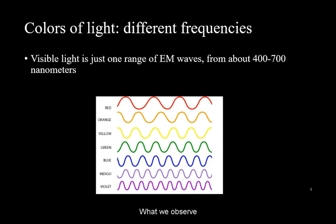What we observe as a color of light is related to its wavelength and hence frequency. Specifically for visible light, it ranges from a wavelength of about 400 nm corresponding to violet to 700 nm corresponding to the red end of the visible spectrum.